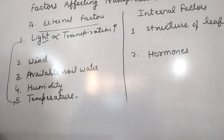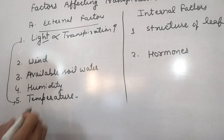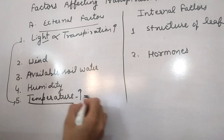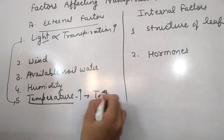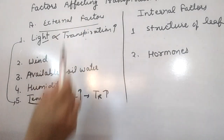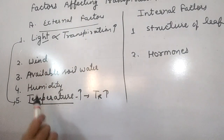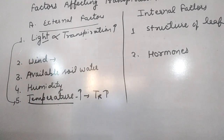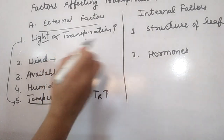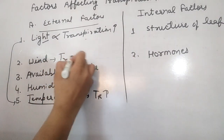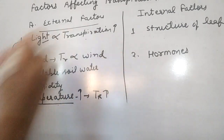Indirectly, light affects temperature — if light is present, temperature is high. High surrounding moisture gets replaced, so the moisture gradient increases and the transpiration rate is high. Wind speed also increases transpiration rate.